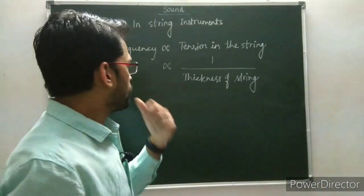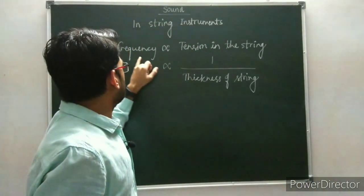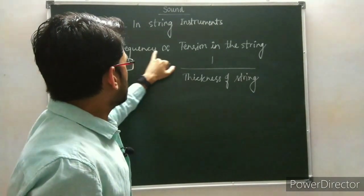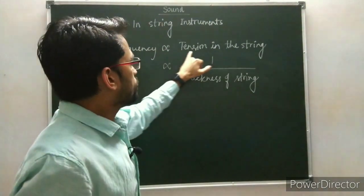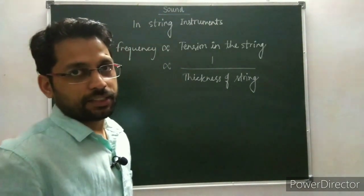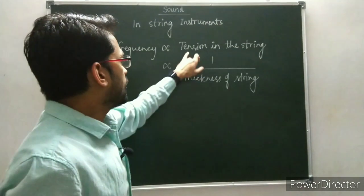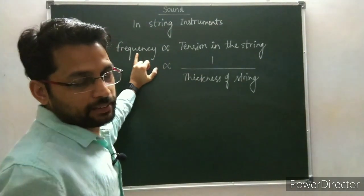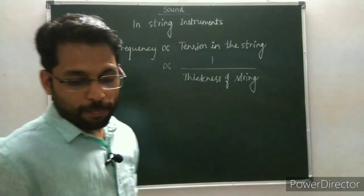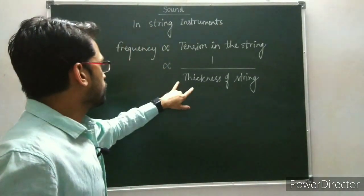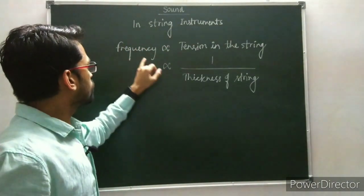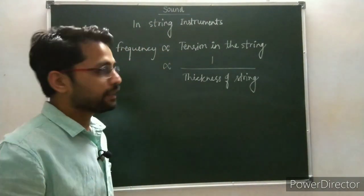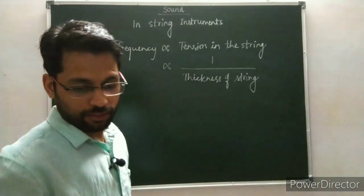We see that the frequency is directly proportional to the tension in the string — when tension increases, frequency increases. Now, coming to the second relation: frequency is inversely proportional to the thickness of the string.